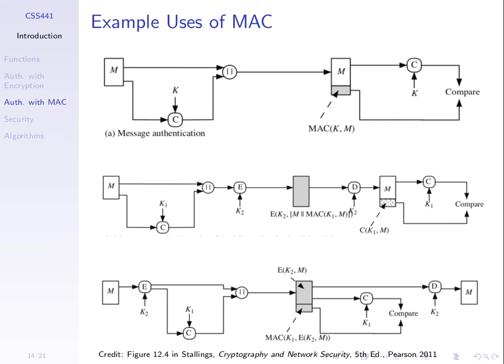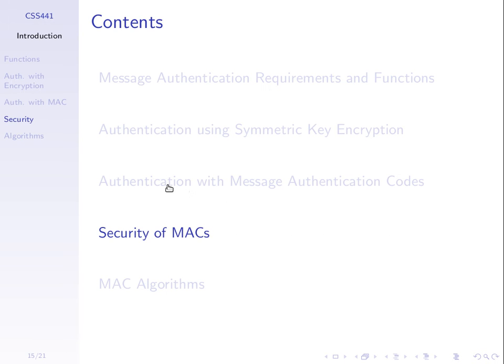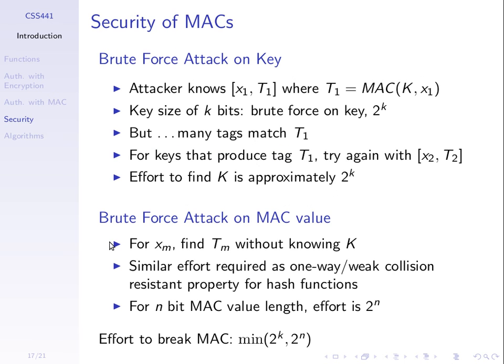There are two measures of MAC security. If the attacker can find the key, they can defeat the system — they could create a modified message and calculate the tag because they have the secret key. The effort required to find a key of length K is 2 to the power of K operations. The way to stop that attack is to make the key long, in the same way as encryption.